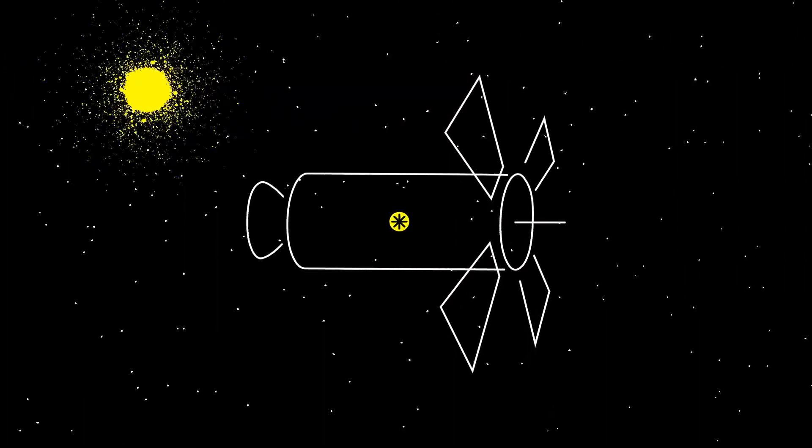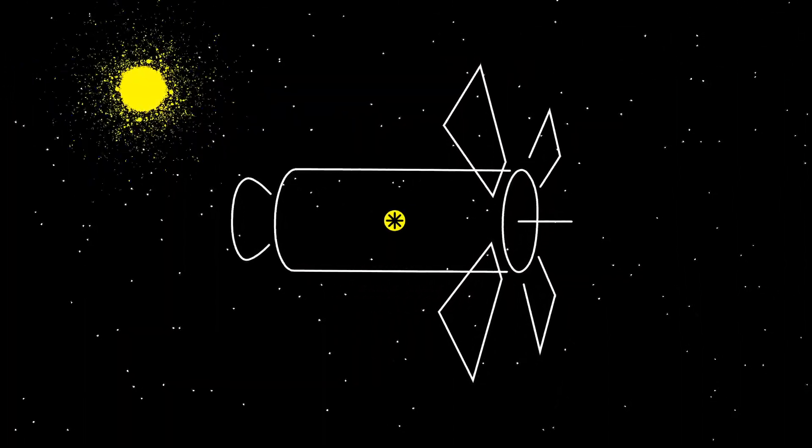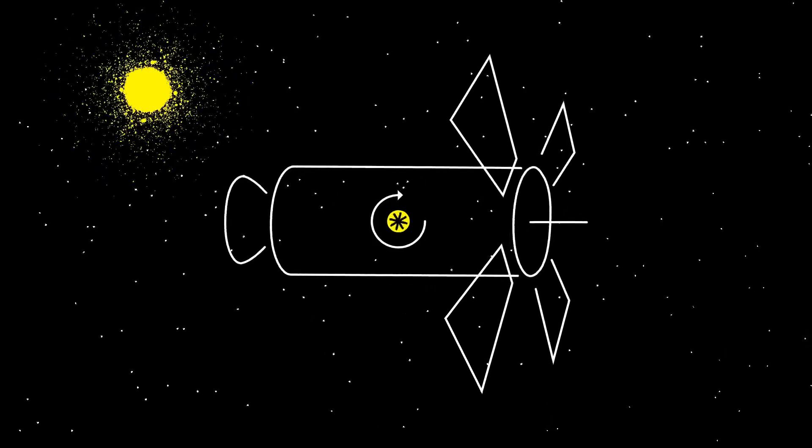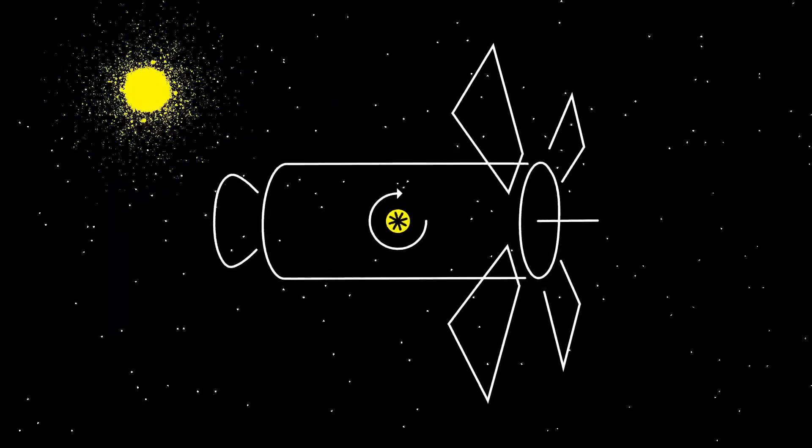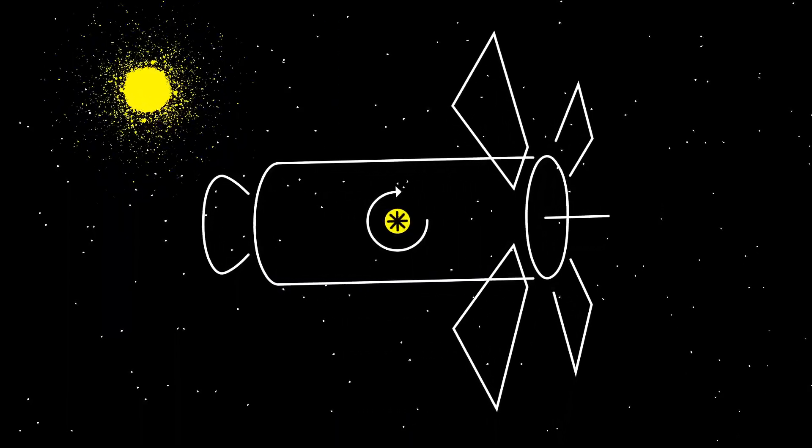Satellites make use of this through a technology called reaction wheels. The core concept is there are very small wheels contained within the spacecraft, and if you spin that wheel very, very fast, you'll cause the spacecraft to react and spin in the opposite direction.